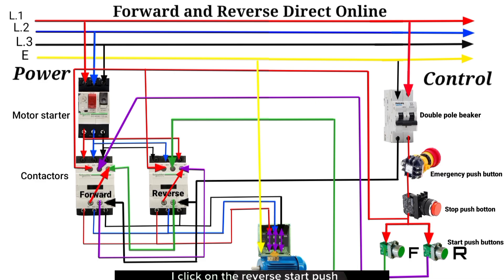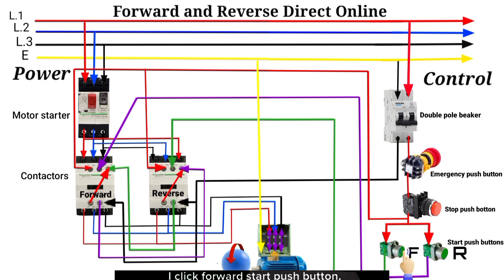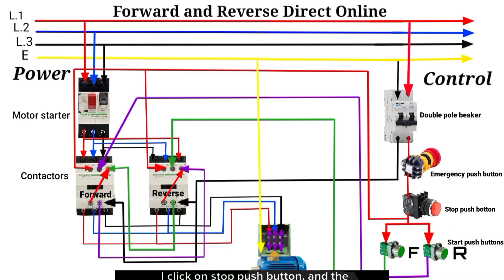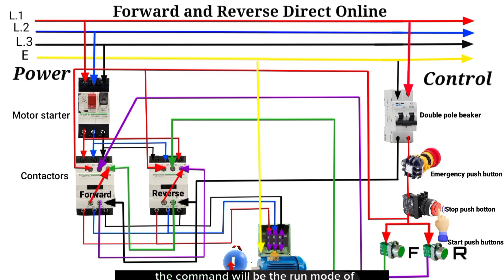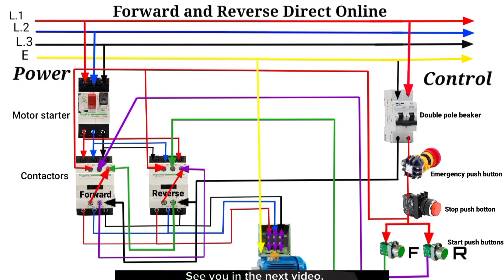I click the stop push button and the motor stops immediately. I click the reverse start push button and the motor starts running in reverse mode. I click the forward start push button and there is no impact on the motor operation. I click stop and the motor stops. I click both forward and reverse start push buttons at the same time — the contactor that first receives the command determines the run mode of the motor.